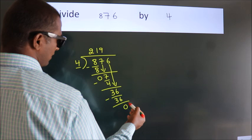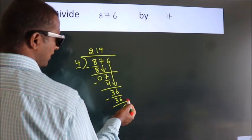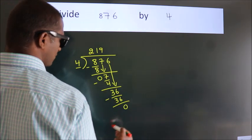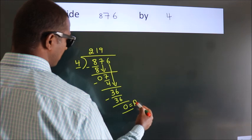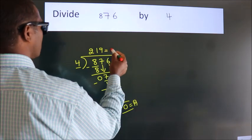After this, no more numbers to bring it down. So, we stop here. This is our remainder. This is our quotient.